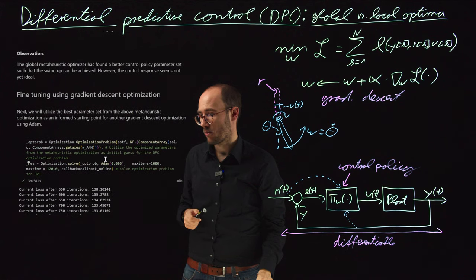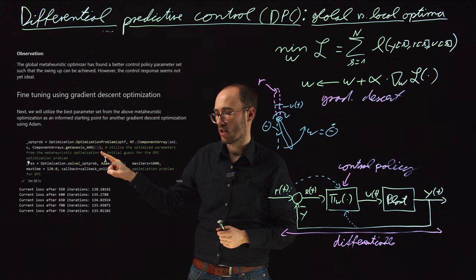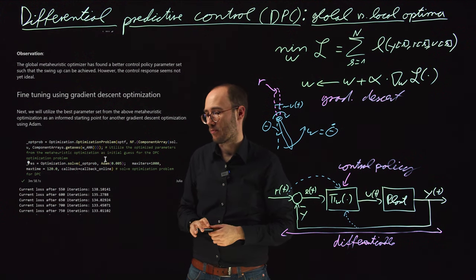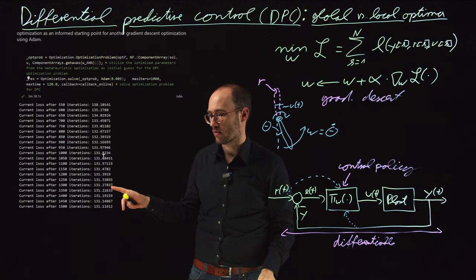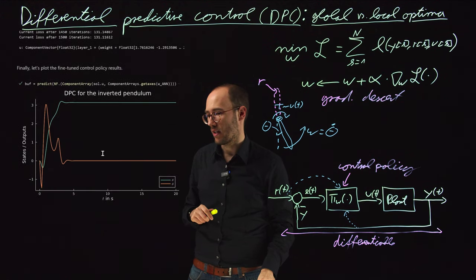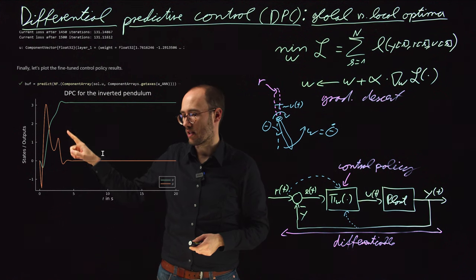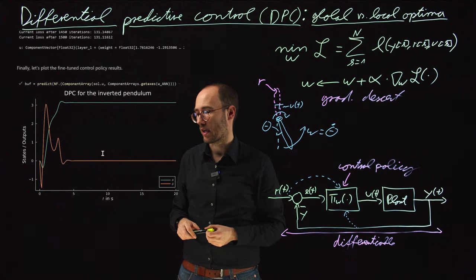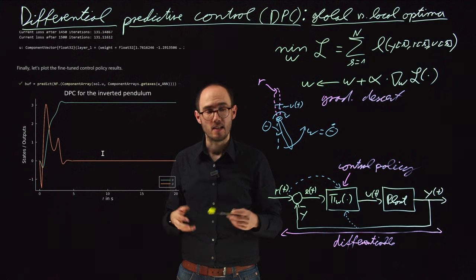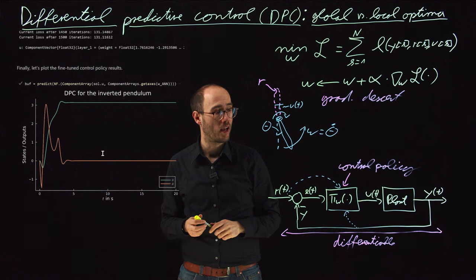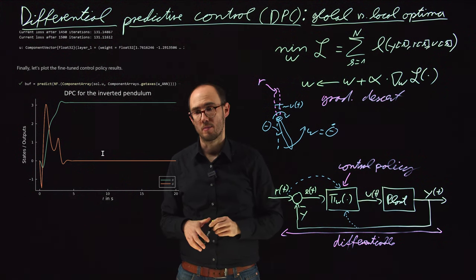We go back to the Adam solver — gradient descent — and use the PSO result as the starting point for the optimization. The loss values go down, confirming the fine-tuning is successful. Plotting the control result after fine-tuning, the overshoot is reduced and the pendulum reaches steady state a bit faster, around five seconds instead of six. This was a healthy and successful technique for this classical control engineering problem, combining a global exploration algorithm like PSO with local optimization via gradient descent.